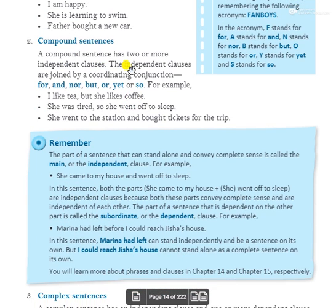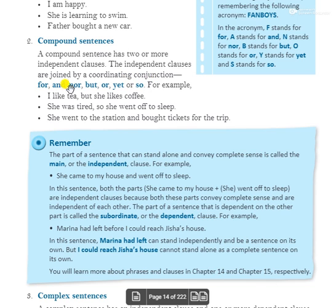The second type is compound sentences. A compound sentence has two or more independent clauses. The independent clauses are joined by a coordinating conjunction: for, and, nor, but, or, yet, or so.